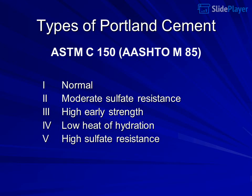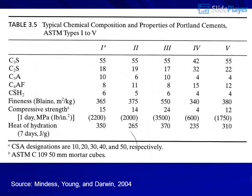Types of Portland cement per ASTM C150 / AASHTO M85: Type I — Normal; Type II — Moderate sulfate resistance; Type III — High early strength; Type IV — Low heat of hydration.